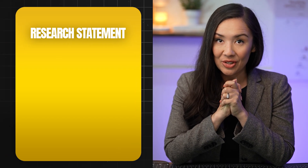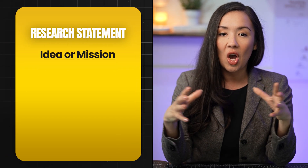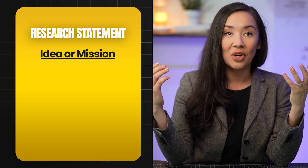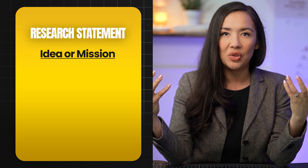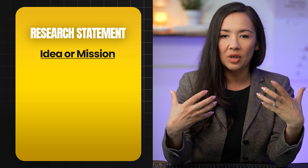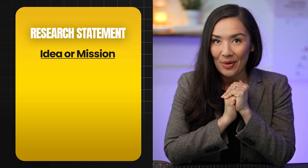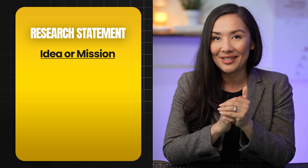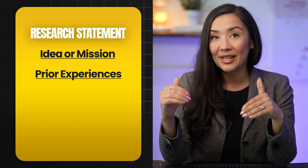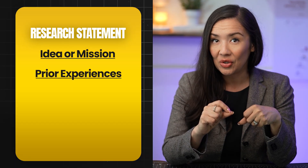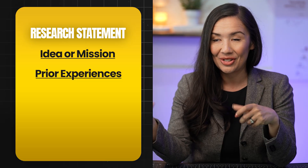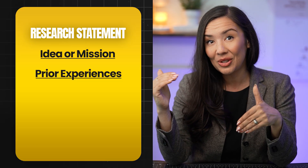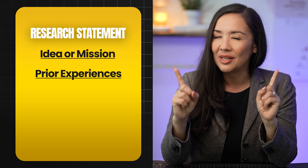The best way to put together a research statement is to start with a big opening description of your idea or mission — what do you want to pursue, what is driving you, what are you really excited about for your PhD? That's the opening statement. Then fill in with what prior experiences prepared you to reach your ultimate goals in research and in life.